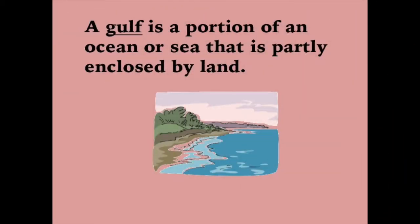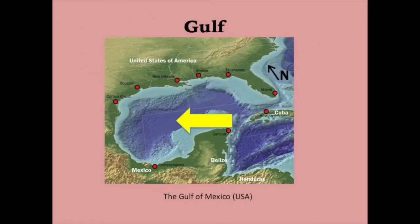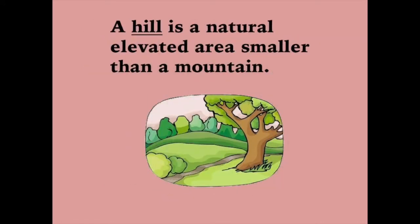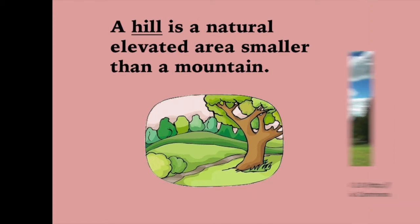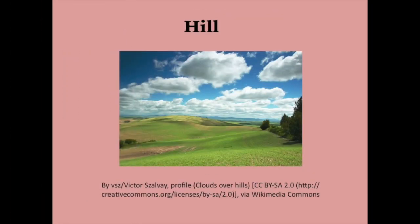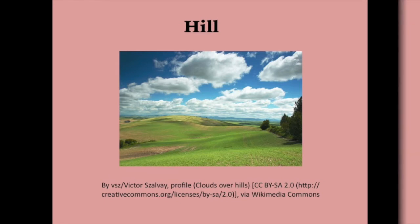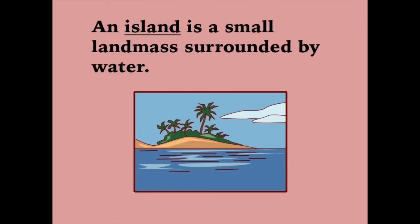A gulf is a portion of an ocean or sea that is partly enclosed by land. A hill is a natural elevated area smaller than a mountain. An island is a small landmass surrounded by water.